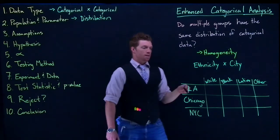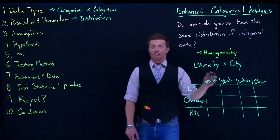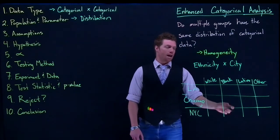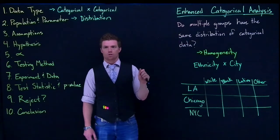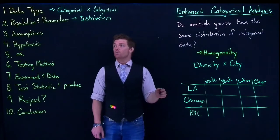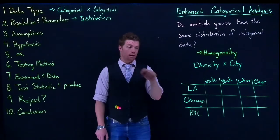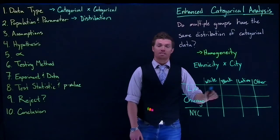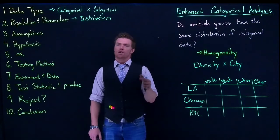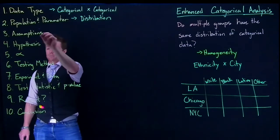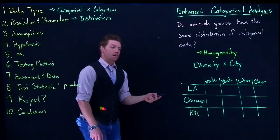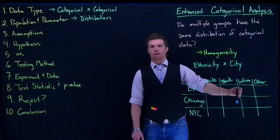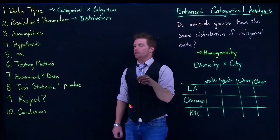Our assumption has to do with our expected value. We need to have at least five in every single one of those slots in our expected values. The way we get the expected value is actually after we collect our data, because we don't have a theoretical value at this point — we just want to see if these cities have the same distribution. This assumption is checked after data collection using a method shown in our software.